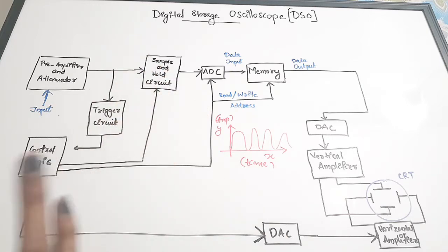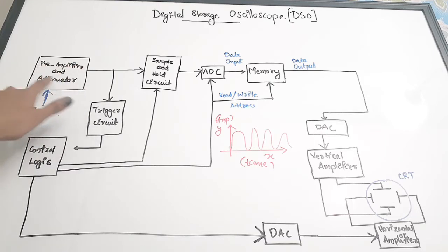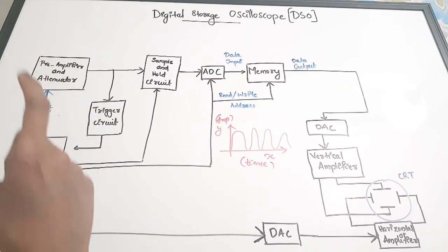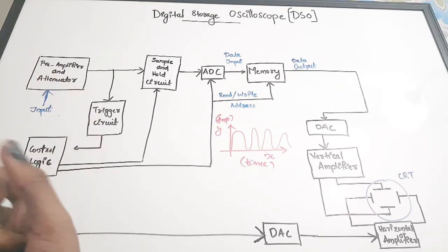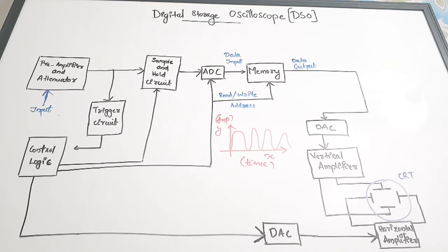Time is internally generated within this device. Now let us see the blocks. The input is being fed to the pre-amplifier and attenuator. The function of the pre-amplifier and attenuator is to amplify the given input and also attenuate the noise present in the input. That is the first unit. Since this is a digital storage oscilloscope, the signal fed to the device is to be converted to a digital format.